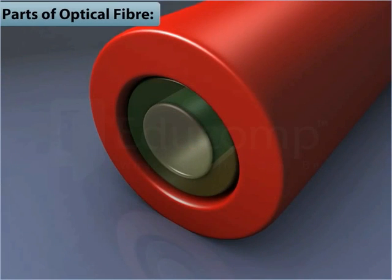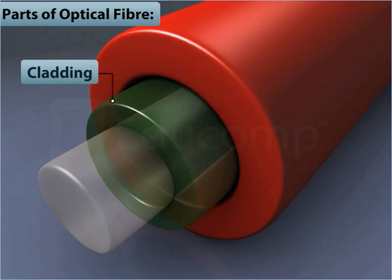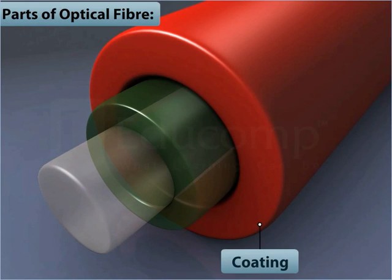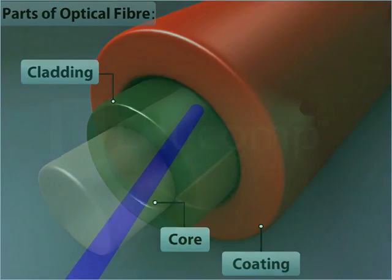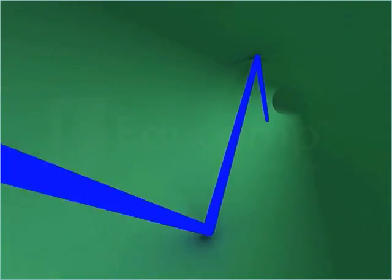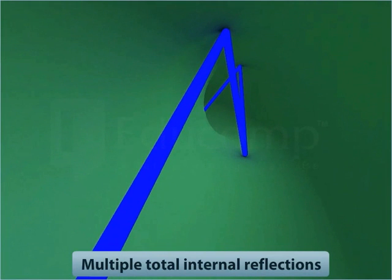It has three main parts: a core, a cladding, and a coating. Optical fibers transmit light and digital information over long distances by total internal reflection through the core without any appreciable loss of intensity.